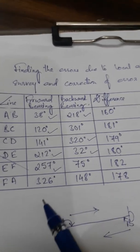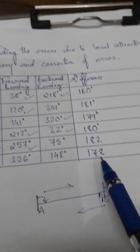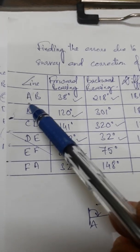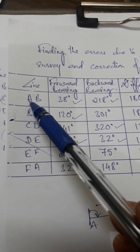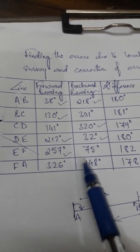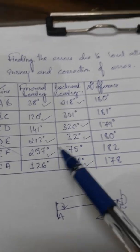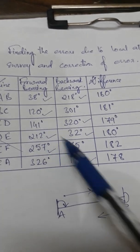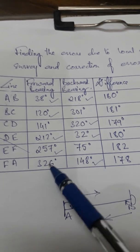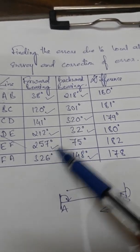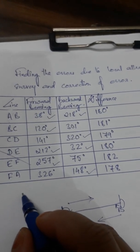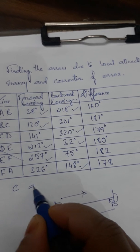There is a chance the backward reading of EF can be wrong. For line FA, since in the earlier line AB the reading from A to B was correct, we consider the backward reading from F to A is also correct. So the values that are not ticked — the probable errors — are happening at point C and point F. These are the points suffering from local attraction.